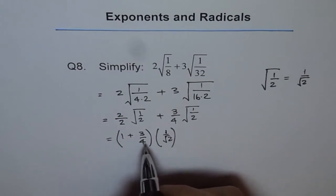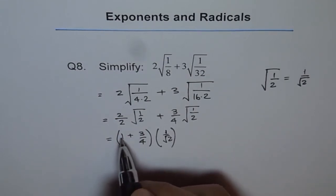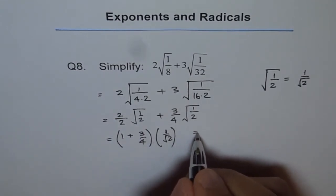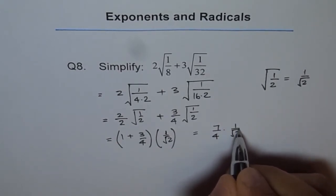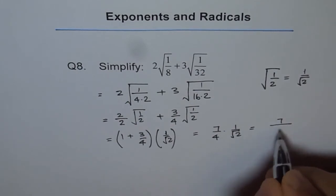Now we can combine this so this becomes 4 plus 3 is 7. So I can write this as 7 over 4 times 1 over square root 2 or we can write 7 over 4 square root 2 either way.